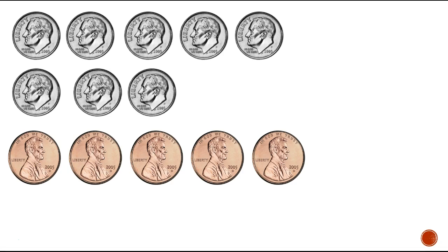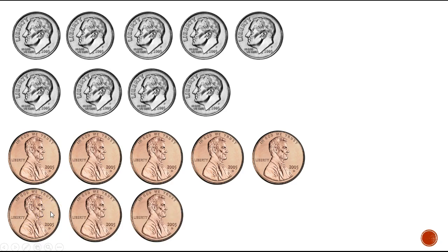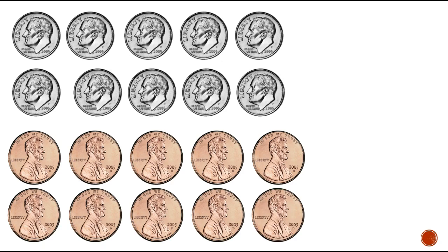I added a dime. How much is a dime worth? Right, 10 cents. So I'm going to go up 10 — from 85 and 10 more is 95. Now I'm going to add some more. Watch carefully — I added a penny, so let's count up: 95, 96, 97, 98, 99, 100. I added a dime there because I had 10 pennies.